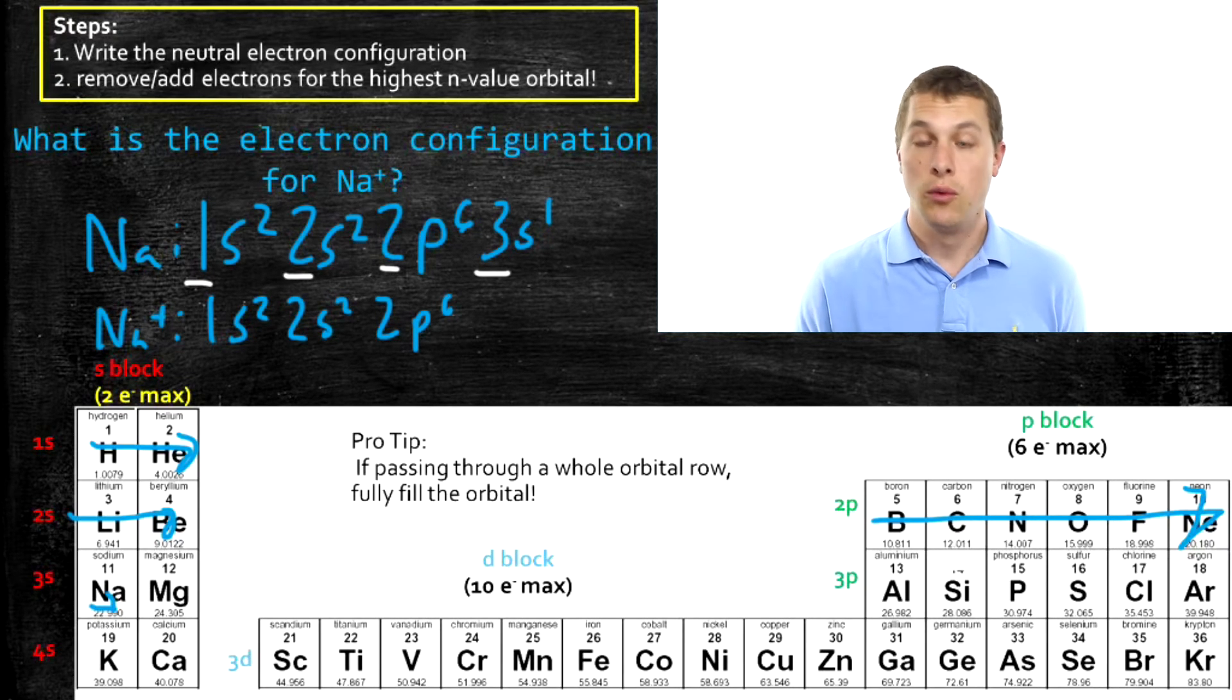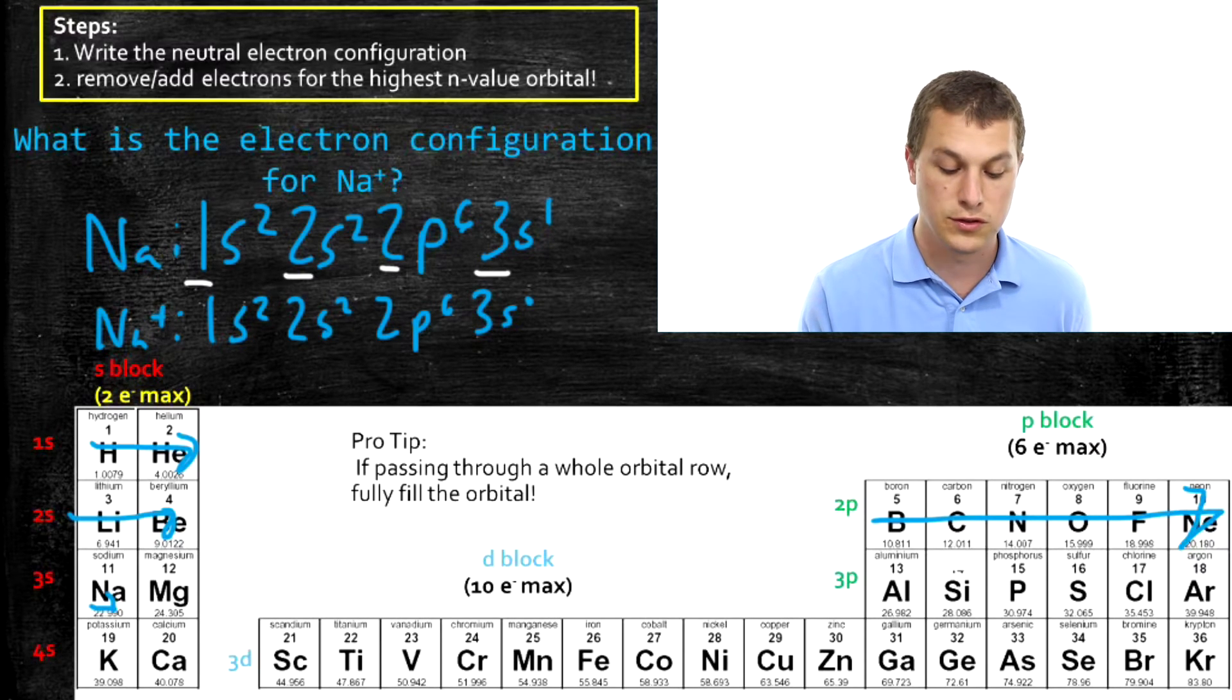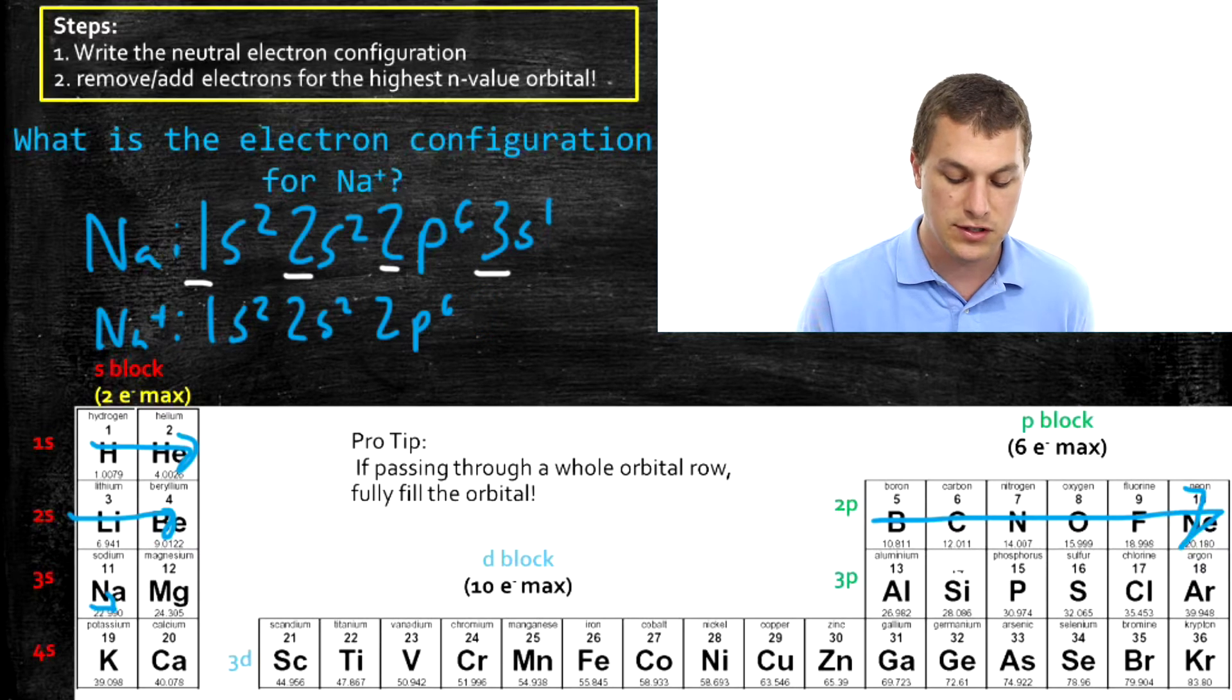That 3S electron's gone. We could write 3S0, but that's just a totally empty orbital. So there's actually no reason to even write that. We can just leave it as 2P6.